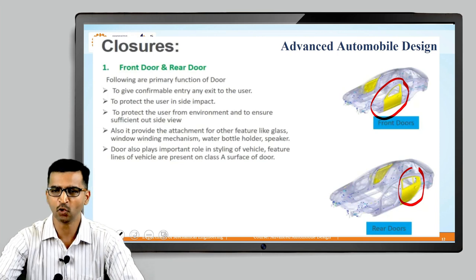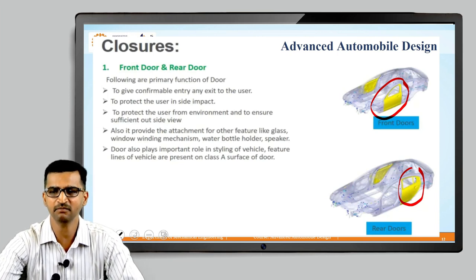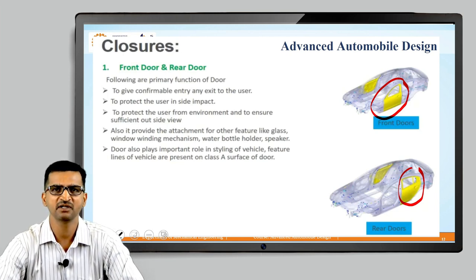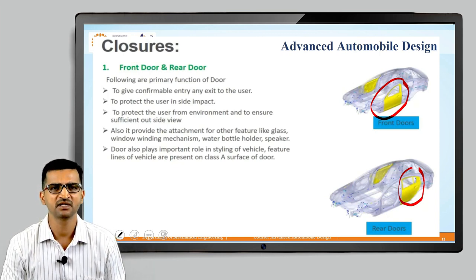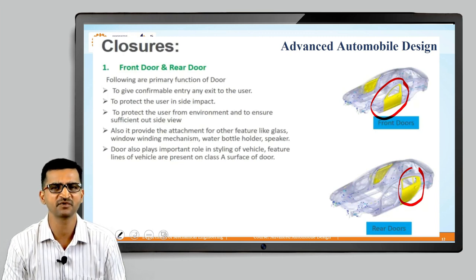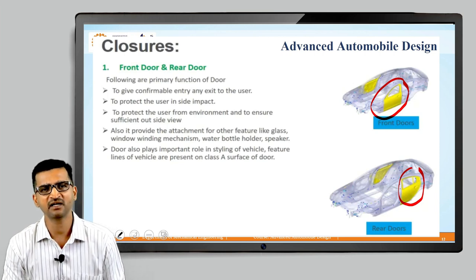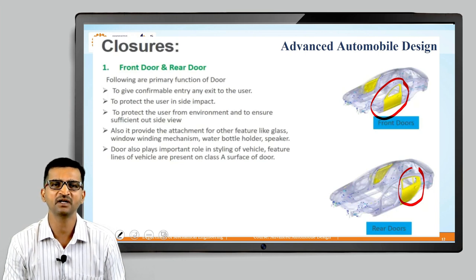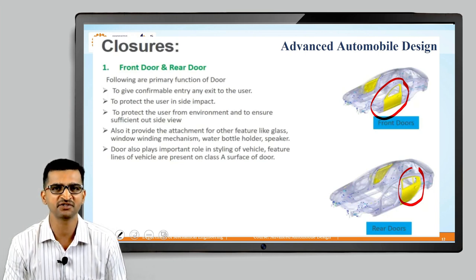Allowing access is not the only function of doors. The second important function is to protect the passenger in case of side impact. Suppose a car is going on the road and some other vehicle hits it from the side — for example at a highway intersection, a truck hits the car from the side. In that scenario, the door is the member which protects the passengers. Car companies provide stiffening elements and reinforcements in the door so that it will not allow intrusion of another vehicle into the passenger compartment.